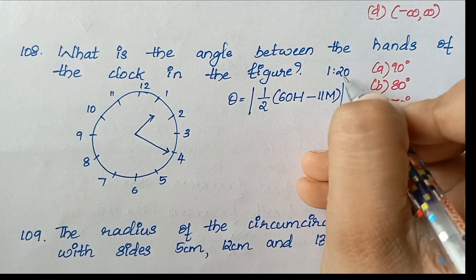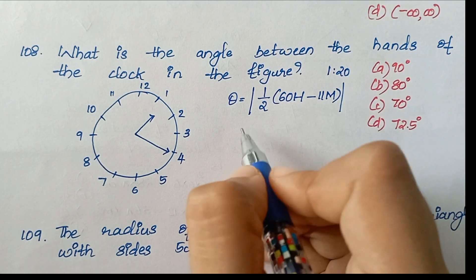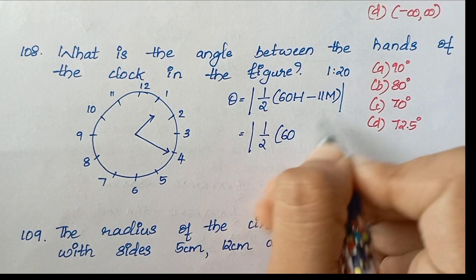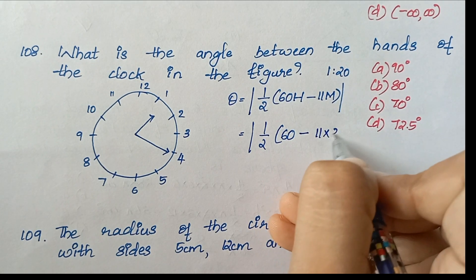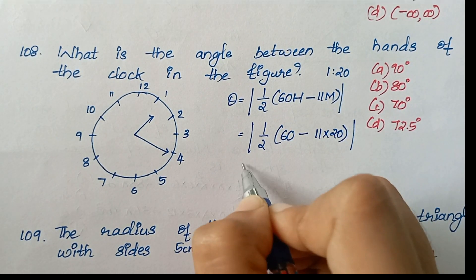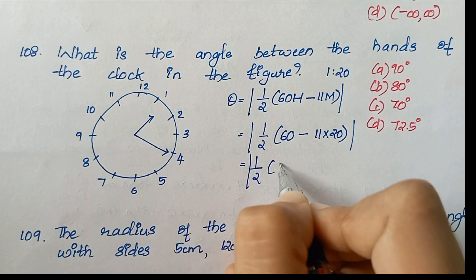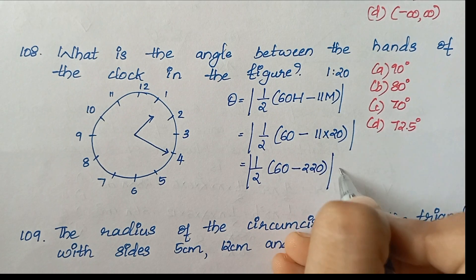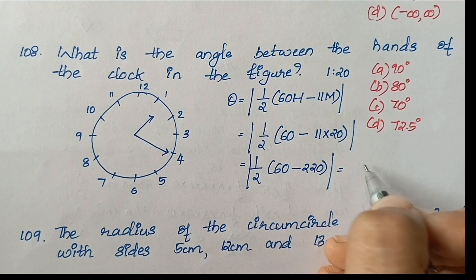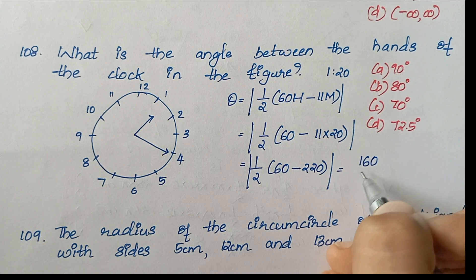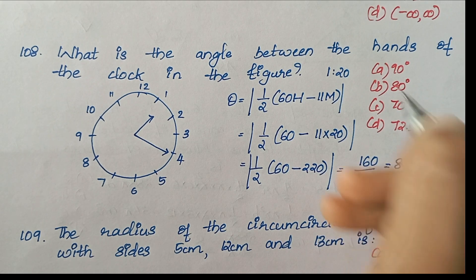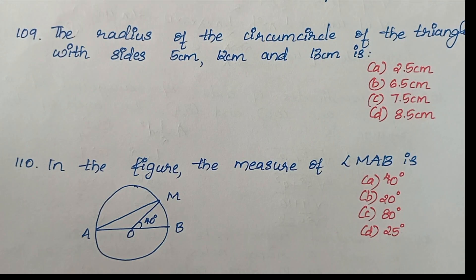Substituting: ½ × |60 × 1 − 11 × 20| = ½ × |60 − 220| = ½ × 160 = 80 degrees. Option B is the right answer.